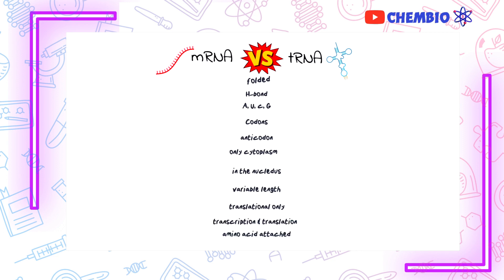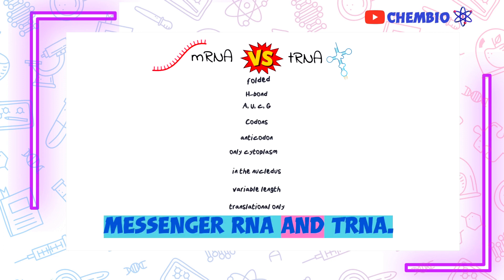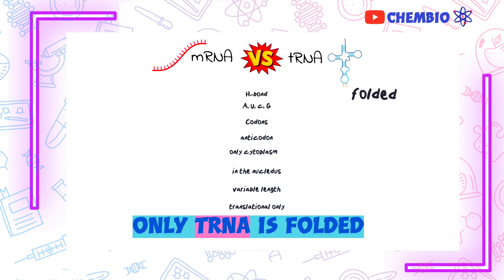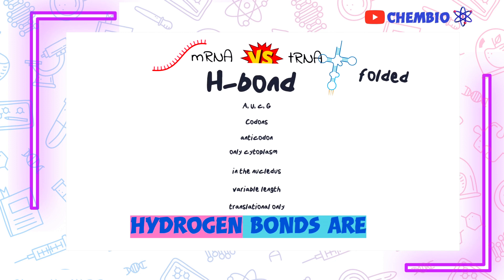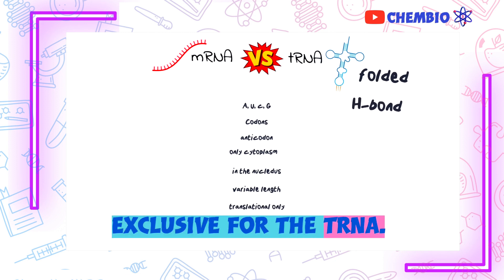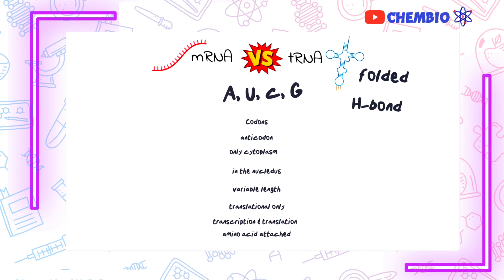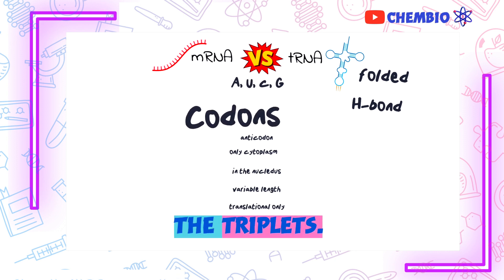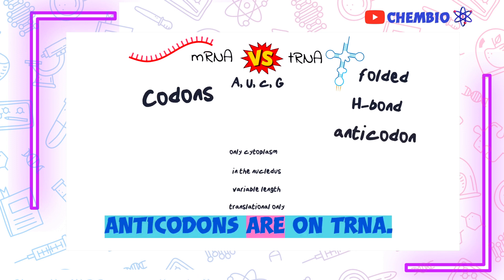Now let's make a comparison between messenger RNA and tRNA. Starting with folding: only tRNA is folded because of those loops held together by hydrogen bonds — hydrogen bonds are exclusive to tRNA. Both tRNA and messenger RNA are made up of the same mononucleotides: A, U, C, and G. Codons — the triplets — are found exclusively on the messenger RNA, while the anticodons are on the tRNA.